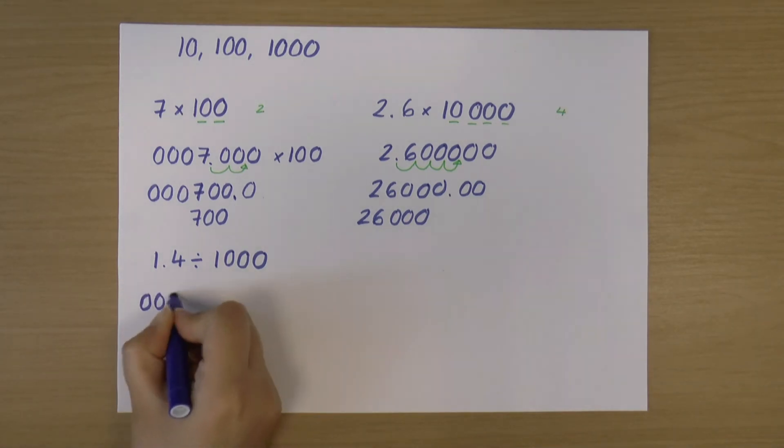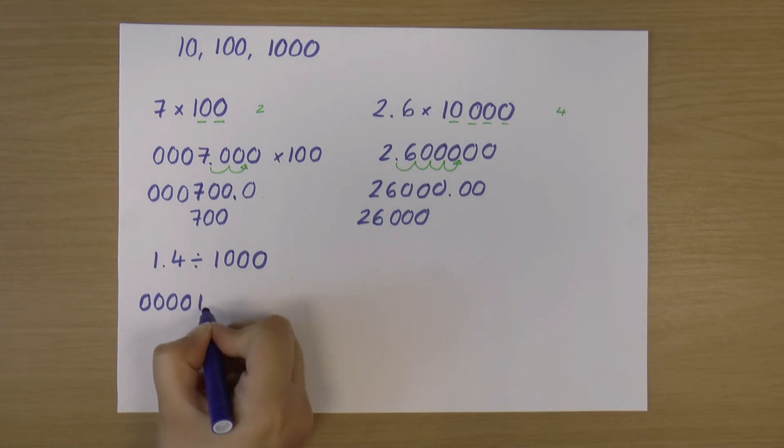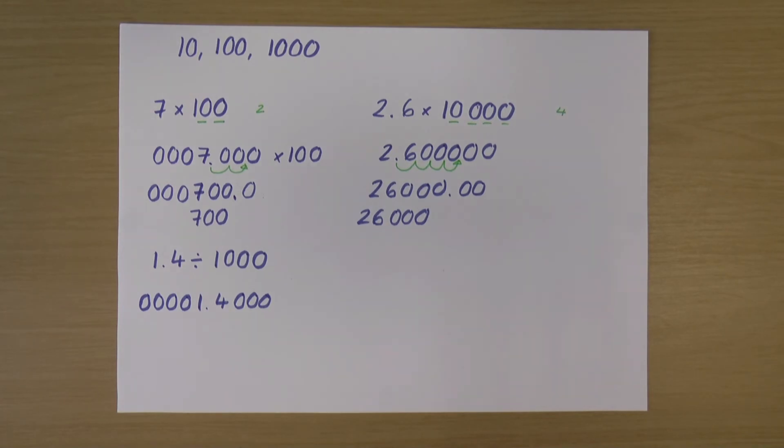Now remember I said we have infinite 0s either side. I'm going to draw some of those on. 1.4 and some on the other side just for safe measure. So I've got some of those 0s. And it's still 1.4. The number hasn't changed.